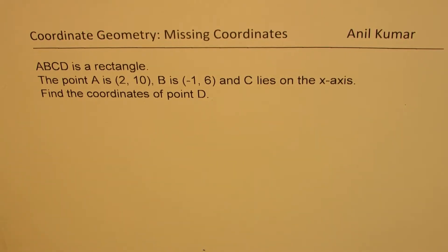The question here is ABCD is a rectangle. Point A is (2, 10), B is (-1, 6), and C lies on the x-axis. Find coordinates of point D.